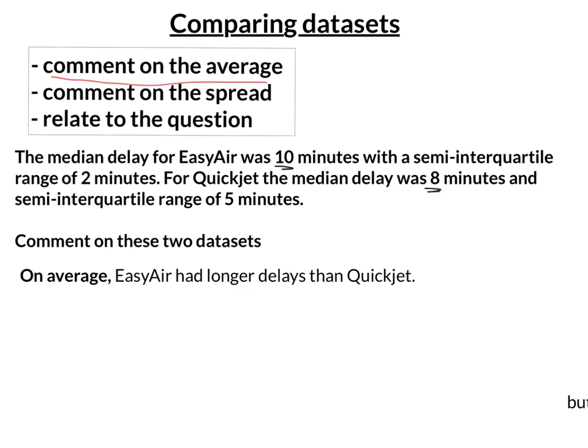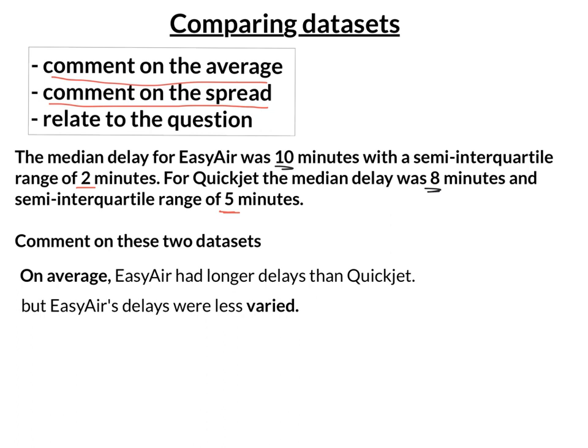Now I'm going to comment on the spread. We've got a semi-interquartile range of 2 minutes for Easy Air and 5 minutes for Quick Jet. So Easy Air has a smaller spread — Easy Air's delays were less varied; they were more consistent. My overall comment is: on average, Easy Air had longer delays than Quick Jet, but Easy Air's delays were less varied.